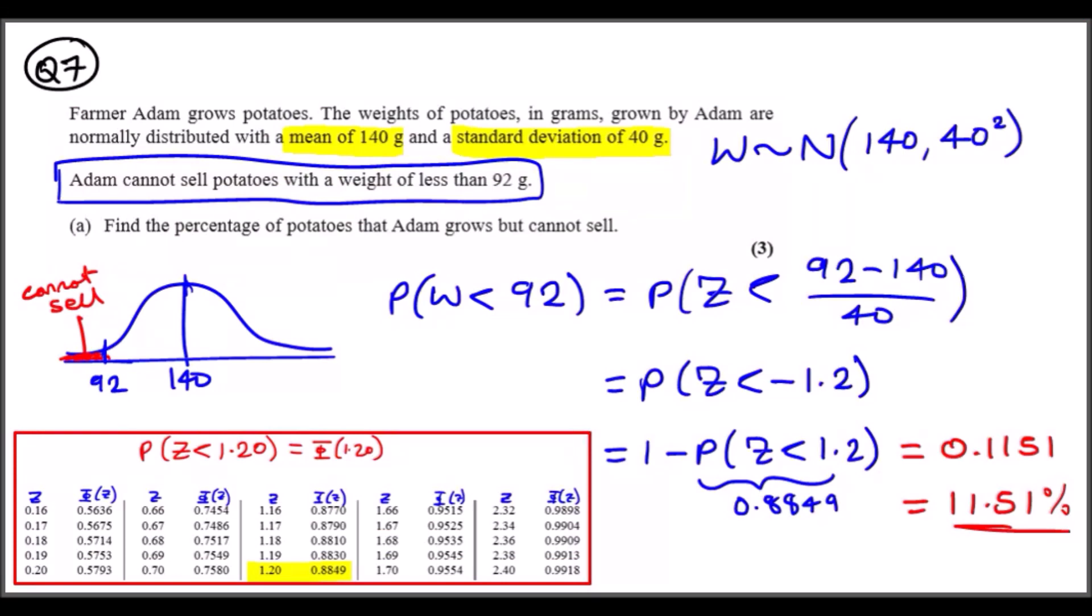Alright, number seven. Farmer Adam grows potatoes. The weight of potatoes in grams grown by Adam are normally distributed with a mean of 140 and standard deviation of 40. I always write this formula, so I'm going to let W be the weight of potatoes. This is a random variable, normally distributed with a mean of 140 and variance 40 squared or standard deviation 40.